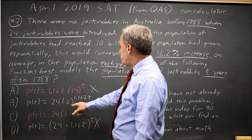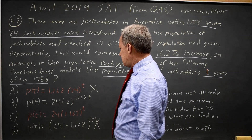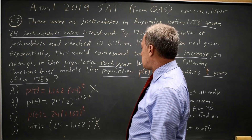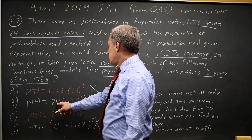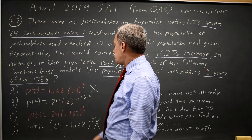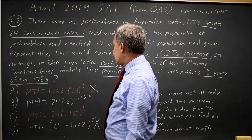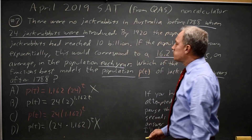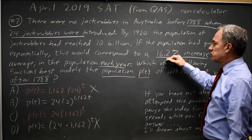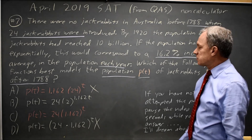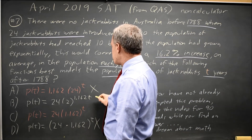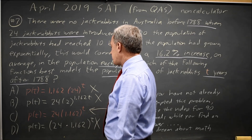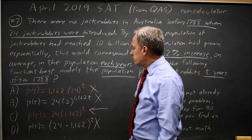In choice B, at T equals 1 we would have 24 times 2, a little more than 2, which is a little more than 48 jackrabbits. But we're only supposed to increase by 16% each year, and we just more than doubled going from T equals 0 to T equals 1, so choice B is wrong.